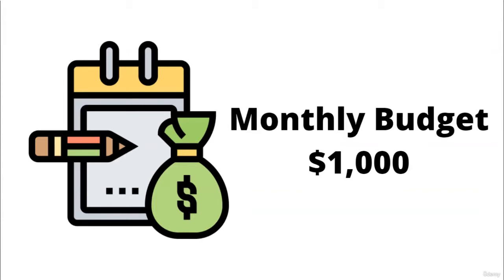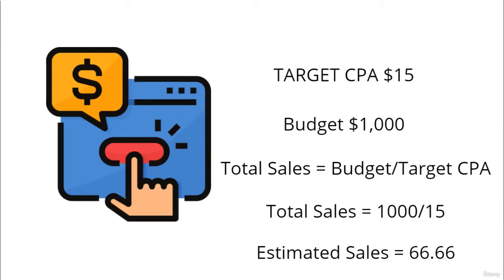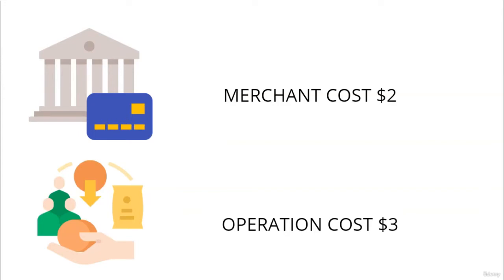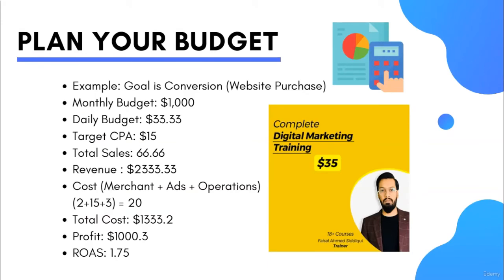The sale price of the digital marketing training is $35. I've set a target to grab one sale at $15 or below. To get estimated monthly sales, I divide the monthly budget by the estimated cost per sale: $1,000 divided by $15 gives 66.66 estimated course sales. Merchant cost is $2 per sale and operation cost is $3. Adding all three — ad cost, merchant, and operation — gives a per unit cost of $20. I then plug these into a forecasted profit calculator to analyze the return on investment.